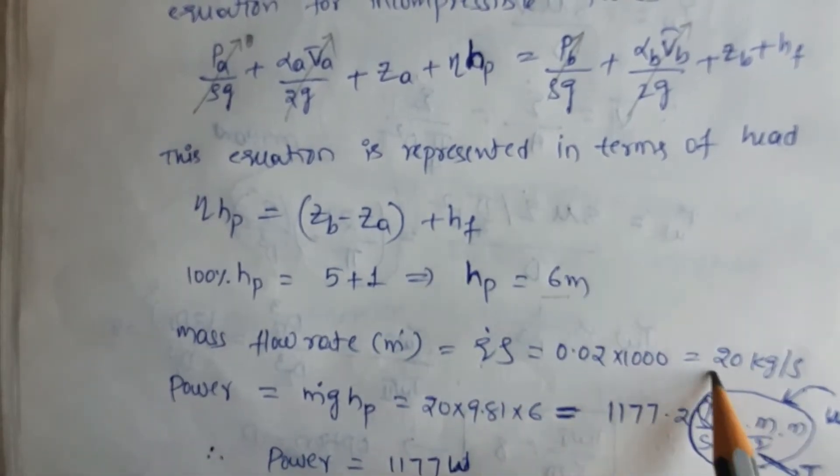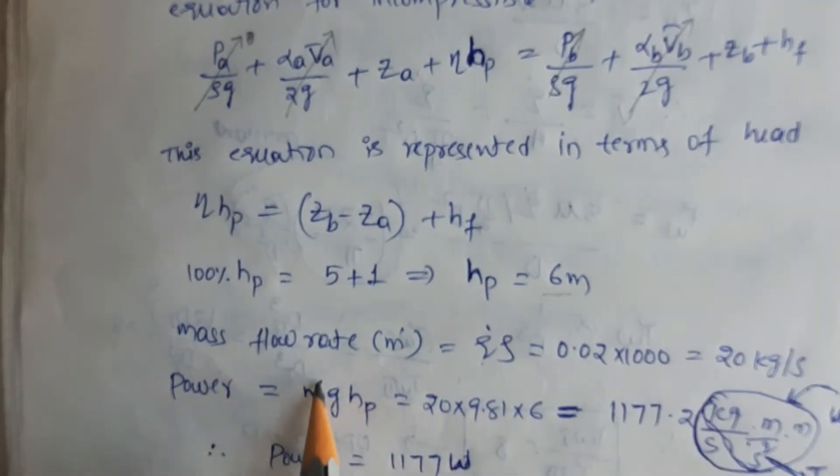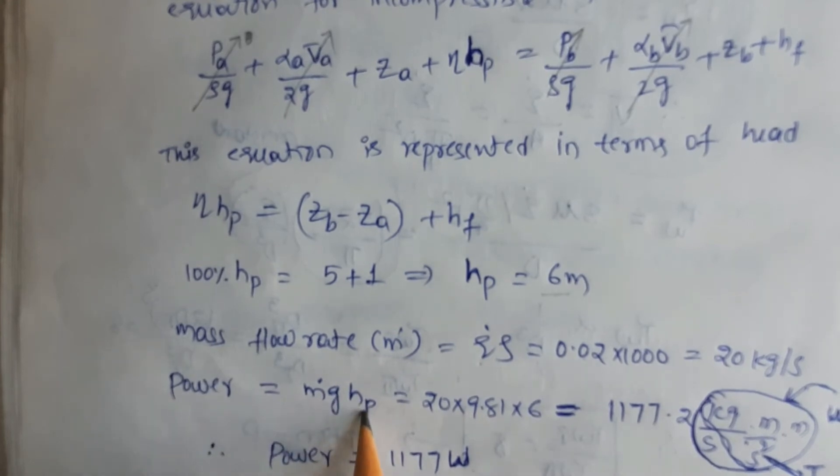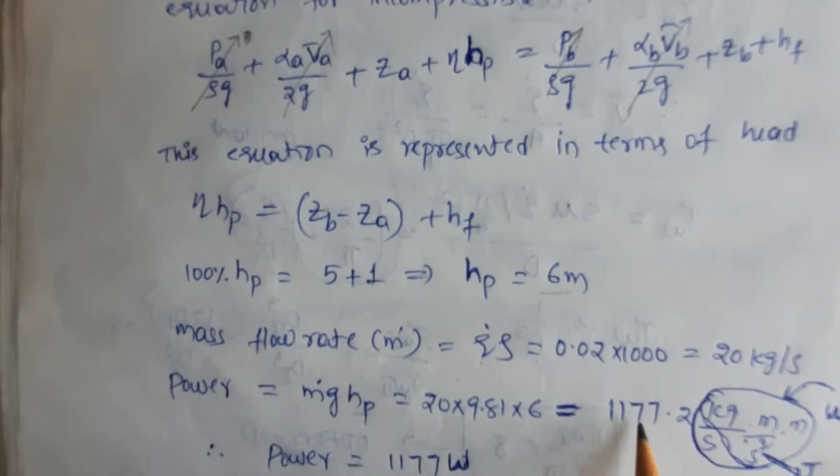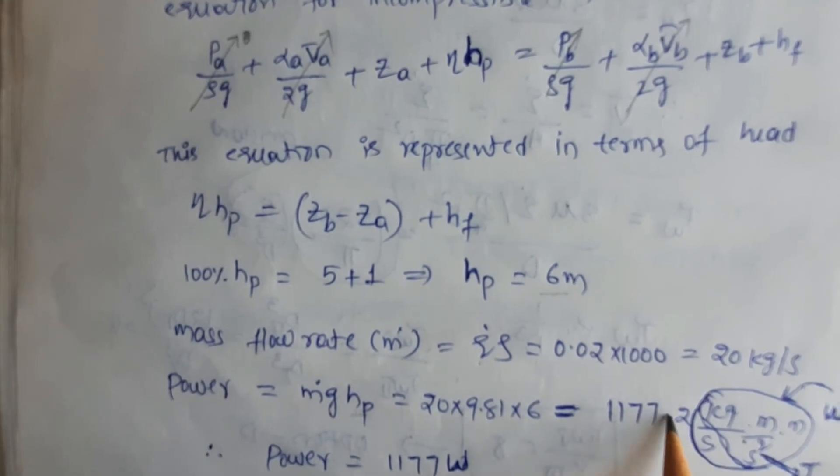Power equals mass flow rate times g times pump head. So, 20 × 9.81 × 6 equals 1177.2 watts.